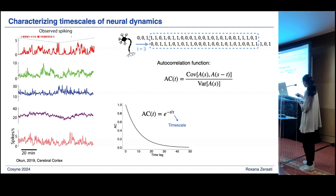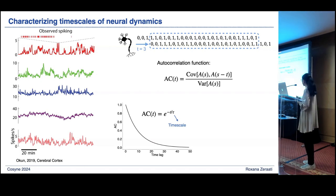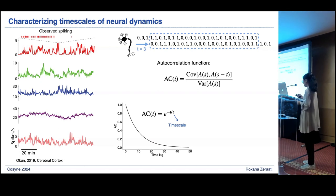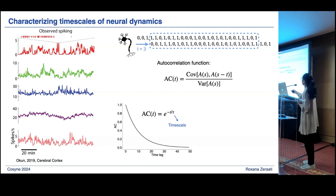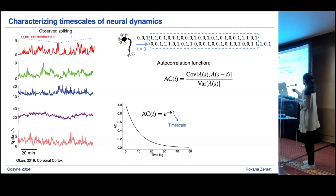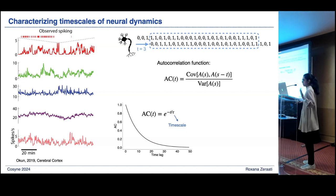We compute the covariance between the time series shifted and the original, normalizing it by the variance. These autocorrelations usually show an exponential decay function. To measure the timescale, we fit an exponential decay function, and the parameter tau gives us the timescale — how fast this autocorrelation decays over time. It's a very simple measurement.